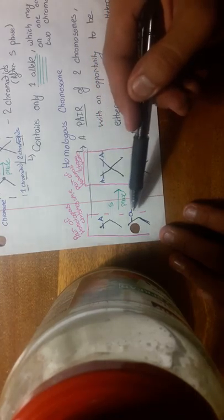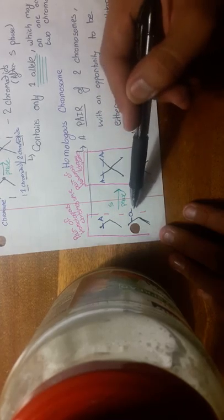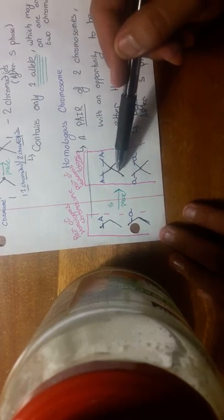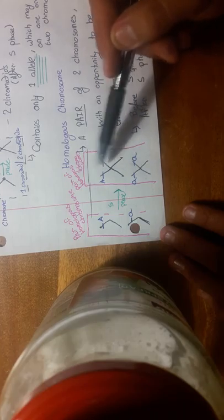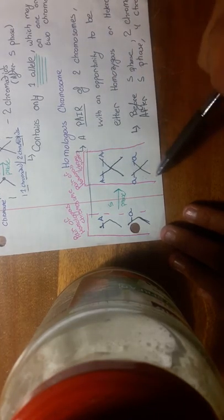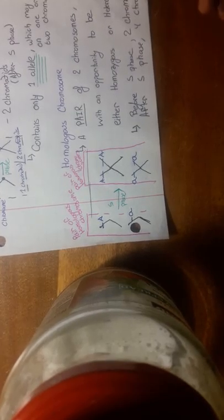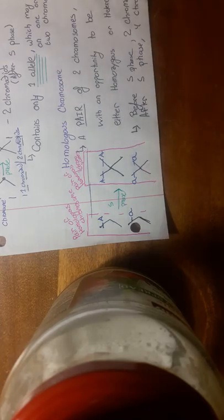And then here we see what happens before S-phase where a pair of homologous chromosomes has two chromatids. But then S-phase happens. The number of chromatids doubles. So now you have one, two, three, four chromatids, but only two chromosomes, and still just one pair of homologous chromosomes. Remember, S-phase copies number of chromatids, but not number of chromosomes.